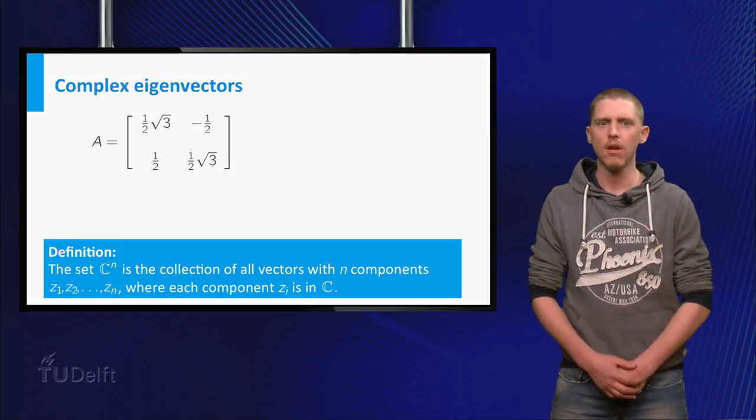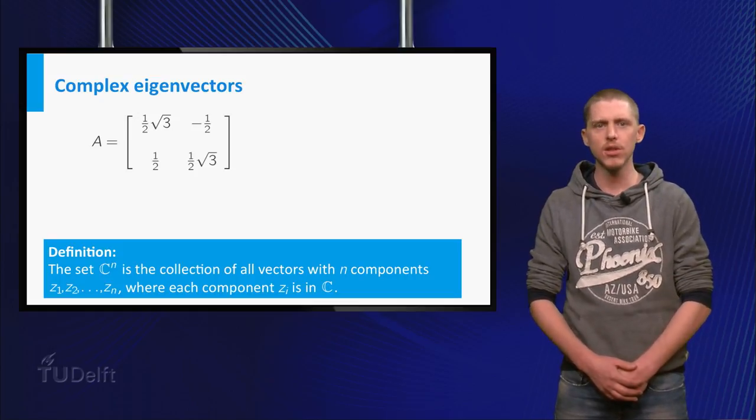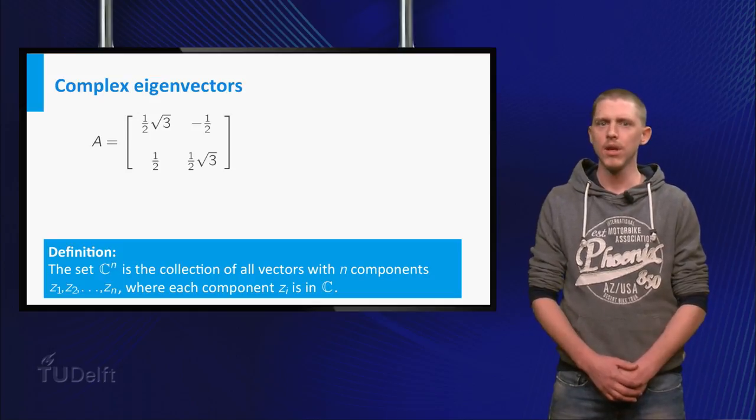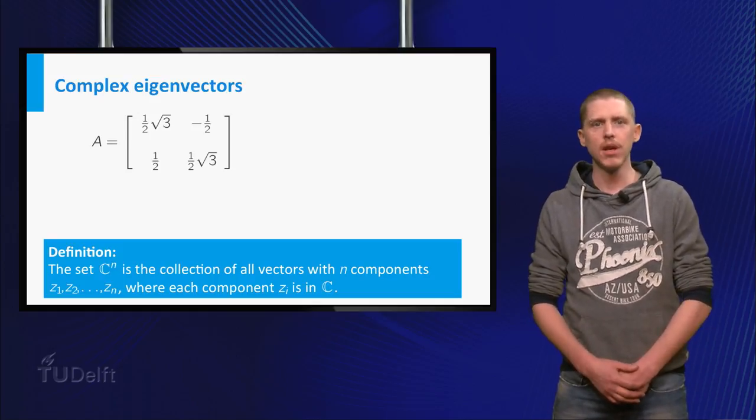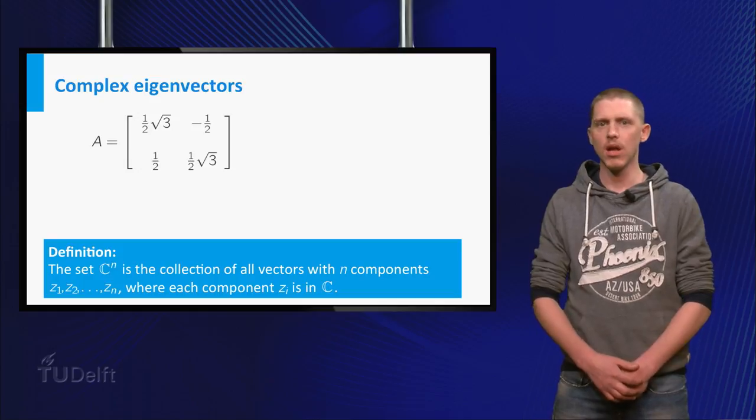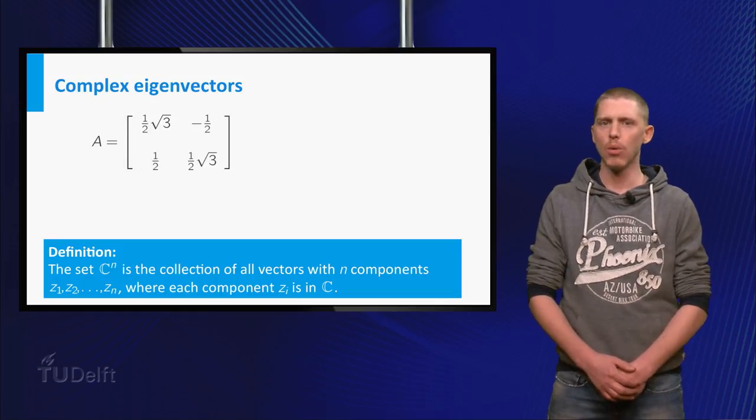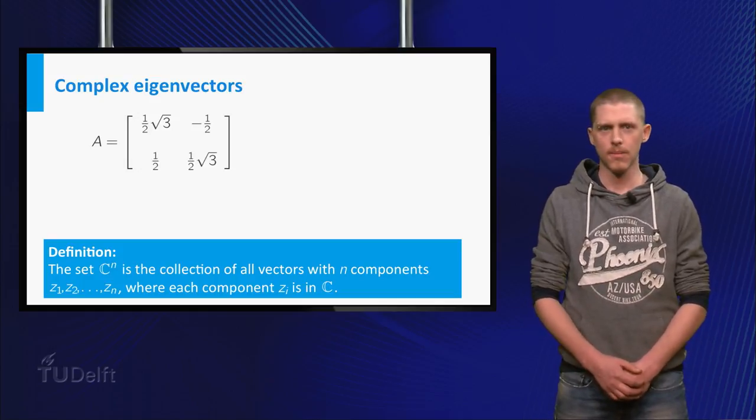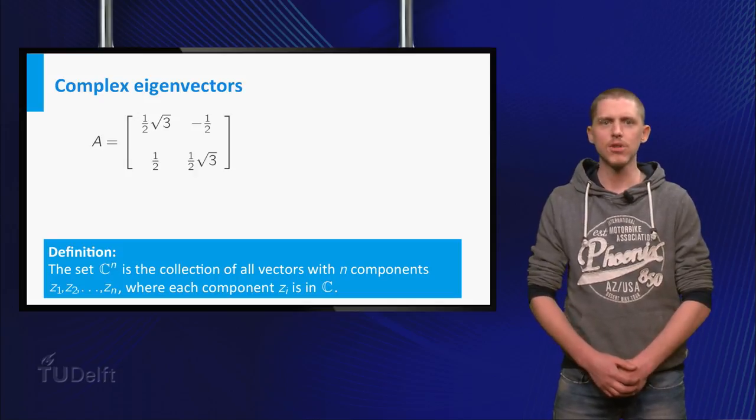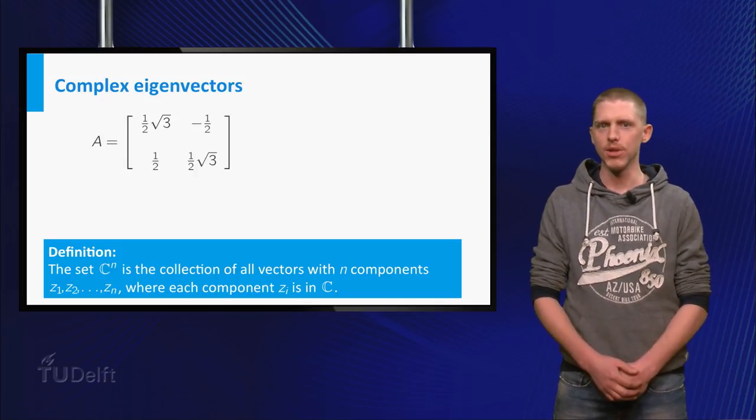The set Cn of complex vectors is an extension of the set Rn of real vectors. Each vector Z in Cn can be written as x plus i times y, where x and y are vectors in Rn. In Cn we have the same rules and algebraic properties as in Rn.